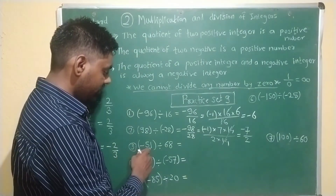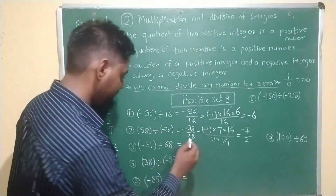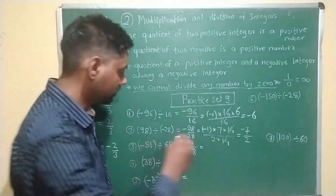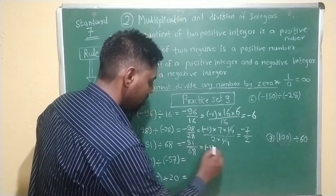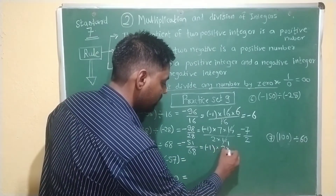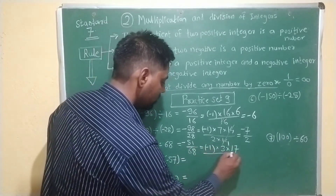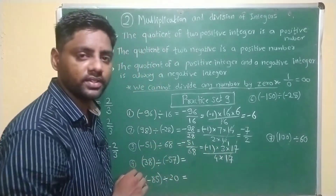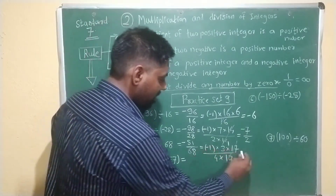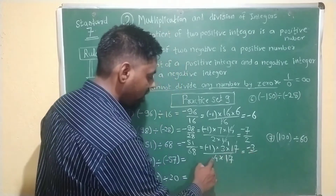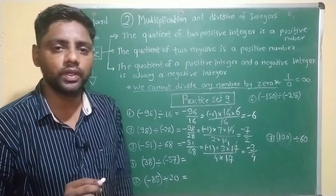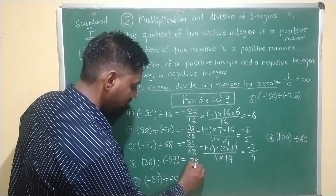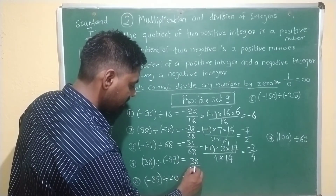Third example: minus 51 divided by 68. Here minus sign is present. Minus 51 equals minus 1 multiplied by 3 into 17, and 68 equals 4 into 17. The 17 gets cancelled. Minus 1 multiplied by 3 is minus 3, divided by 4. So the answer is minus 3 over 4. Next example: 38 divided by minus 57. Minus sign is present, so we write minus 1, then 38 equals 2 into 19 divided by 57 equals 3 into 19.